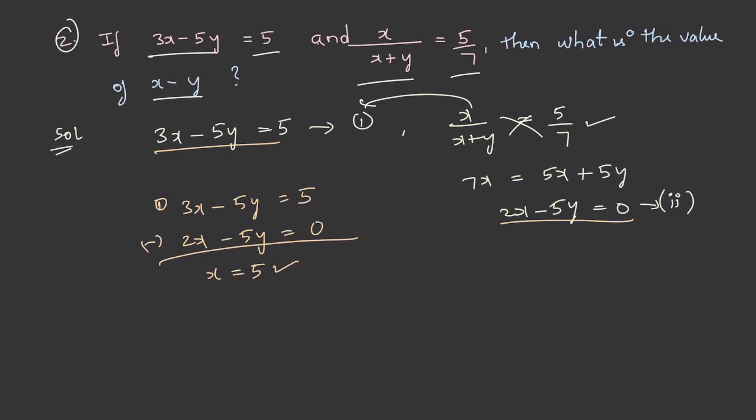If we have the value of x as 5, on substituting this in either equation, we can get the value of y, which equals 2. Now, we need to find the value of x - y.